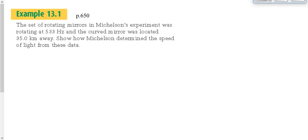Let's do a problem. The center rotating mirror in Michelson's experiment was rotating at 533 hertz — 533 cycles per second. Could we be off by 10% or 20%? Sure we could. But being off by 10% of the frequency is way better than being off by a factor of 100,000 in the measurement of the time it takes for light to travel two kilometers.